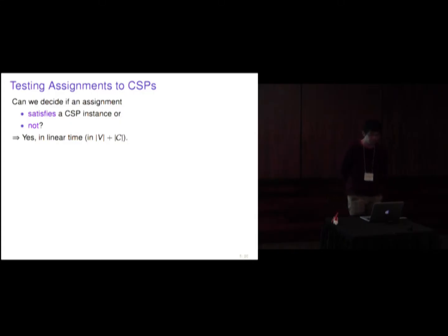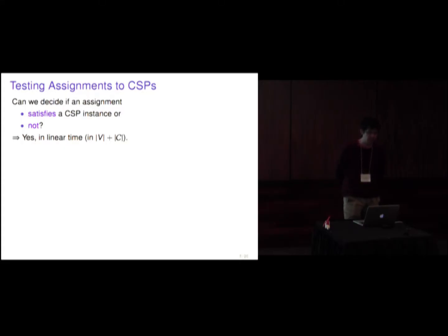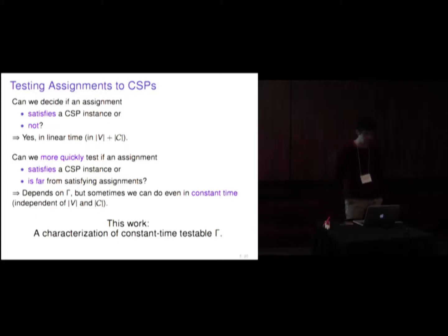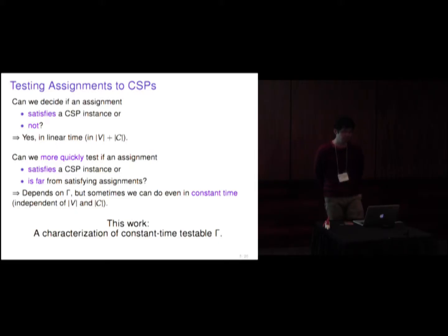The first question is: given an assignment, can we decide if it satisfies a CSP instance or not? This is a very easy question because it can be decided in linear time — we can just check each constraint. The more interesting question is: can we more quickly test if an assignment satisfies a CSP instance or is far from satisfying assignments? This is the property testing framework. The answer depends on gamma, but sometimes we can do it in constant time, meaning independent of the number of variables and constraints.